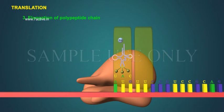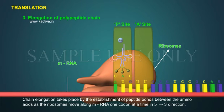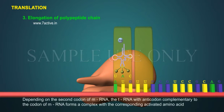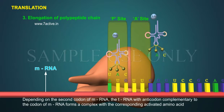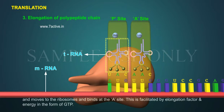Elongation of Polypeptide Chain: Chain elongation takes place by the establishment of peptide bonds between the amino acids as the ribosomes move along mRNA one codon at a time in 5' to 3' direction. Depending on the second codon of mRNA, the tRNA with anticodon complementary to the codon of mRNA forms a complex with the corresponding activated amino acid and moves to the ribosomes and binds at the A site.